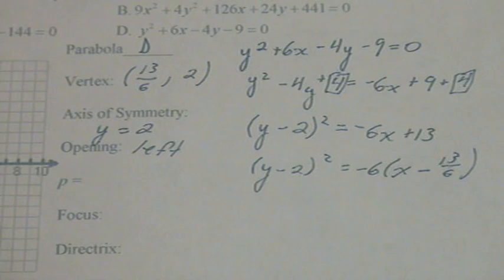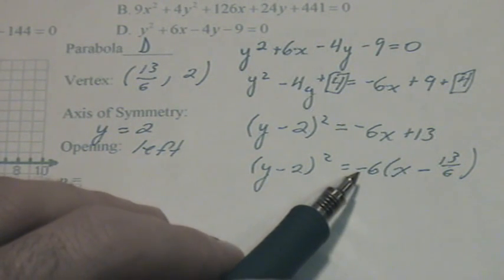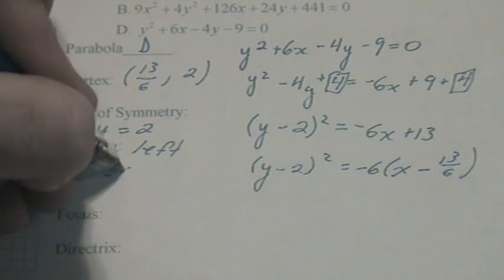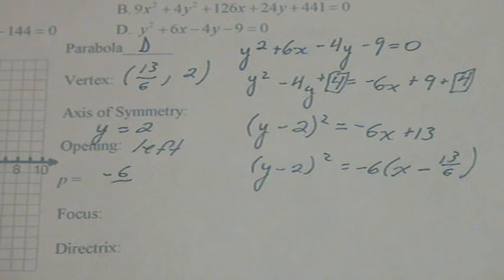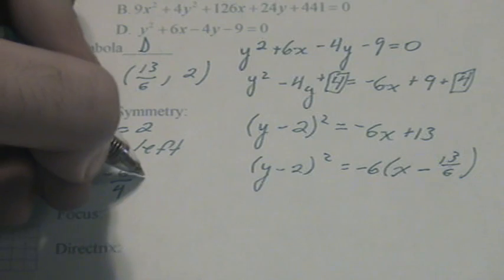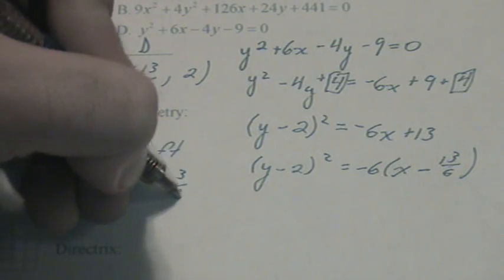Now we'll find p. Remember, this negative 6 is 4p. So in order to find p, we need to take this negative 6 and divide it by 4. Negative 6 divided by 4 can be reduced to negative 3 halves.